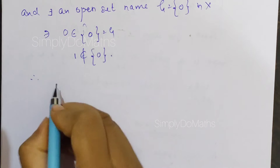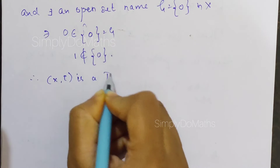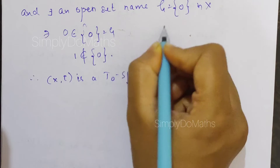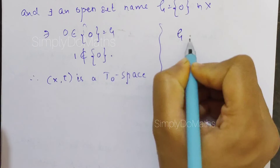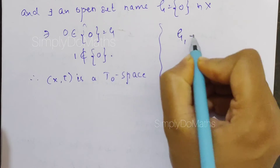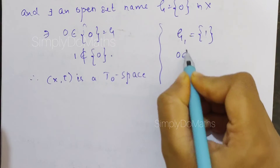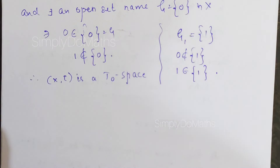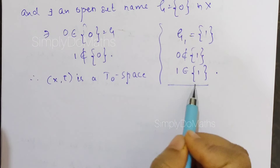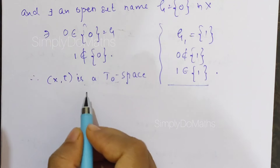That's why (X, tau) is a T0 space. Alternatively, if G is taken as the singleton set {1}, then 0 does not belong to {1} and 1 belongs to {1}. In the same way we can verify the definition of T0 space. Therefore (X, tau) is a T0 space.